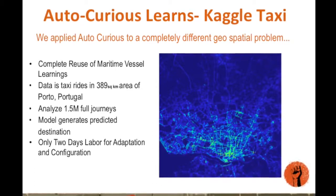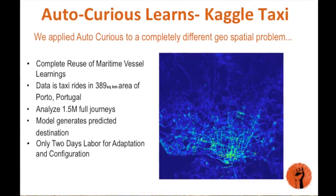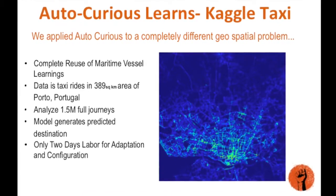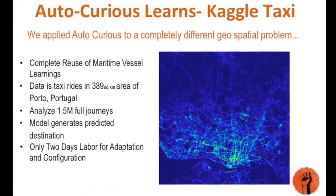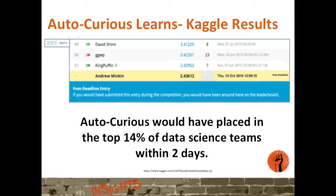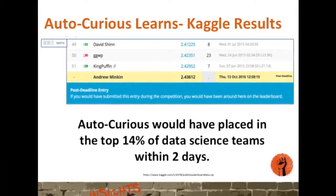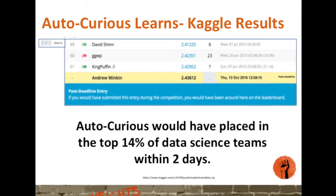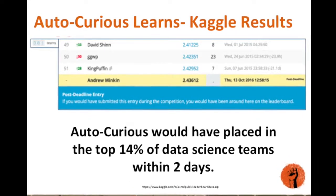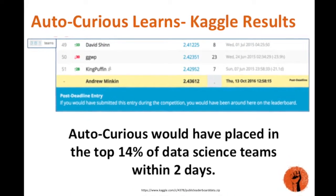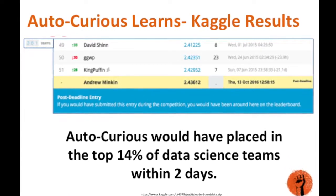While AutoCurious delivered in less than two days, it was able to reapply the learnings from this pilot and produce results that would have ranked it in the top 14% of data science teams working the same problem worldwide — in a fraction of the time and effort. Data science: repeatable and scalable.